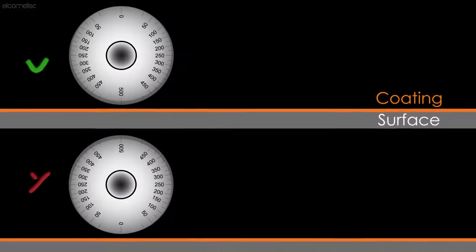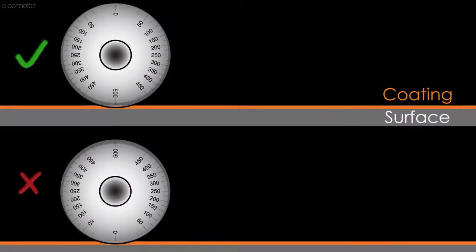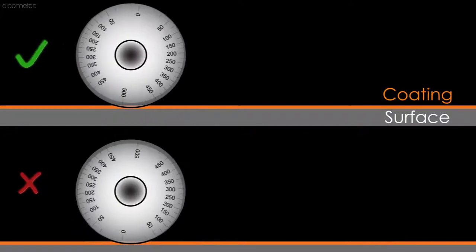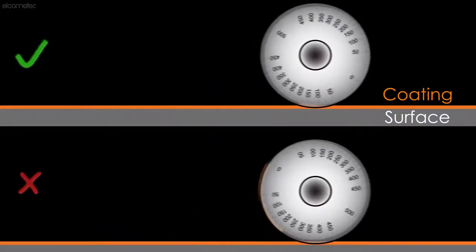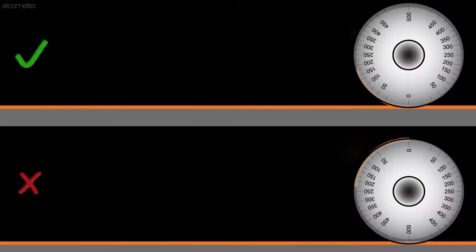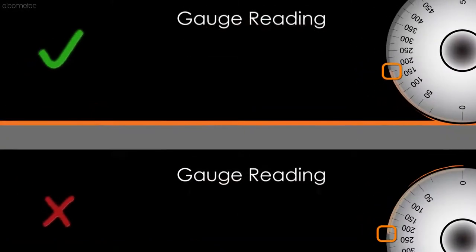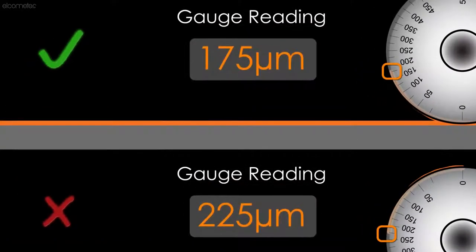When placing the wheel into a wet film, it should never be placed down with the zero closest to the substrate, as the coating film tension will pull the paint up the wheel, resulting in an inaccurate reading.